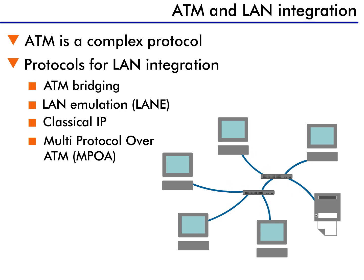Today, most networks are built based on Ethernet, and the ones that aren't typically use Token Ring. Because of this, special protocols were developed to allow ATM, Ethernet, and Token Ring to interoperate as seamlessly as possible. This interoperability is called LAN integration, as it integrates the different LAN protocols so that they can work together. In addition, another protocol was developed to allow ATM to appear to operate in a similar fashion to Ethernet.